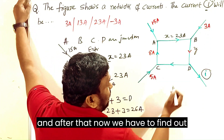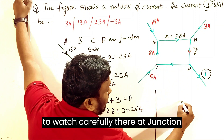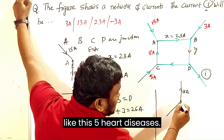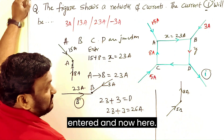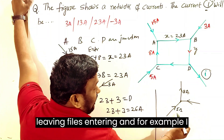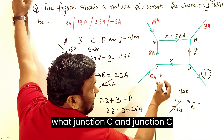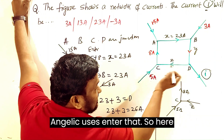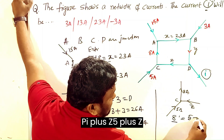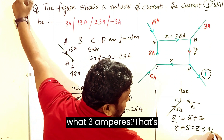Now at junction C: 8 amperes is leaving the junction, 5 amperes is entering, and one more current Z is also entering. So 8 is leaving, 5 plus Z is entering. Therefore, leaving current equals entering current: 8 equals 5 plus Z, which gives Z equals 8 minus 5, that is 3 amperes.